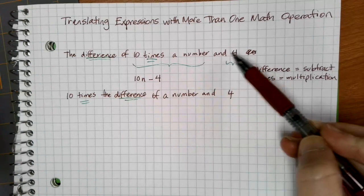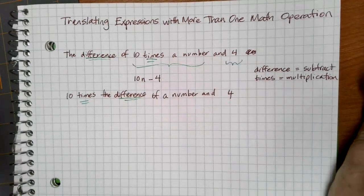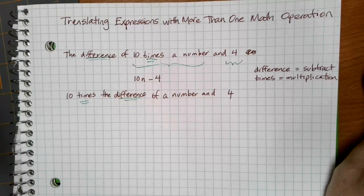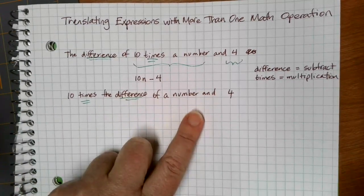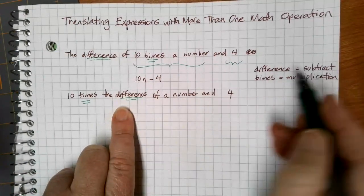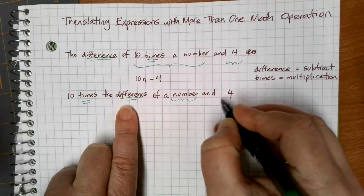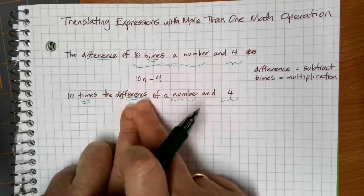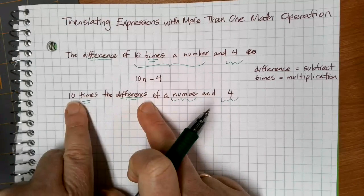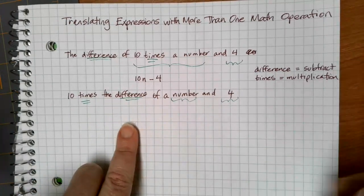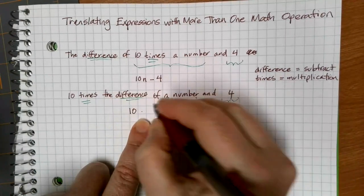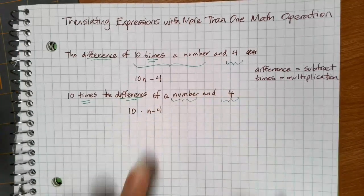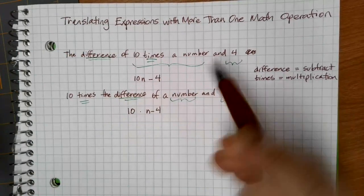That's what's reflected in the way the statement is written: the difference of 10 times a number and 4 — we're looking at the subtraction between that product and 4. In the next expression, even though we're using the same words, a different order is actually implied. It says 10 times the difference of a number and 4. In this case, the difference is just between the number and 4. We get that difference first, and then we do 10 times that answer. So we have 10 times (n minus 4).